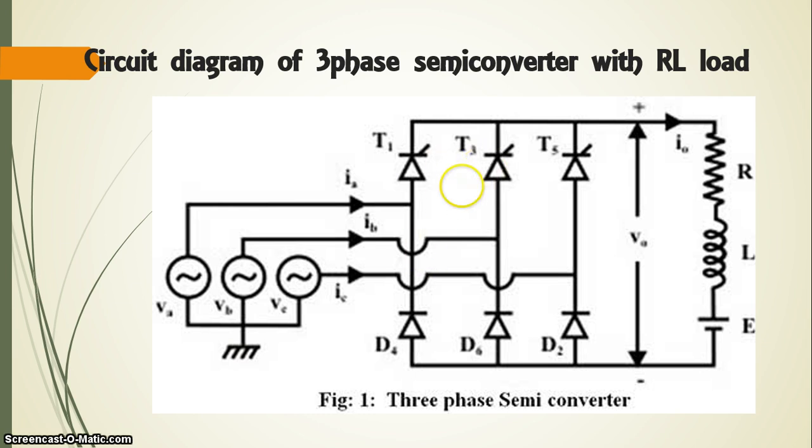When thyristor T2 is triggered, T1 becomes reverse biased and turns off. The load current flows through the thyristor T2 and through the supply phase winding BN.